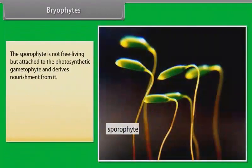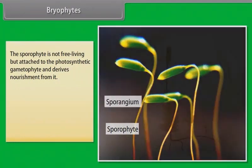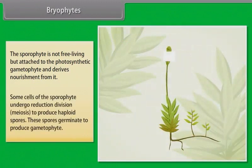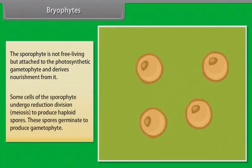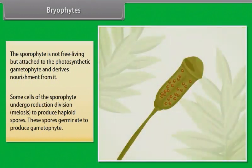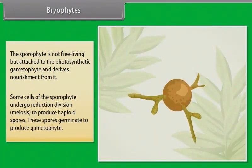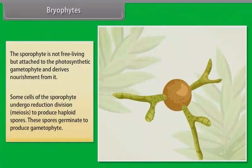The sporophyte is not free-living but is attached to the photosynthetic gametophyte and derives nourishment from it. Some cells of the sporophyte undergo reduction division (meiosis) to produce haploid spores. These spores germinate to produce the gametophyte.